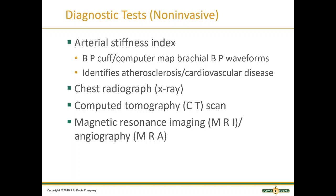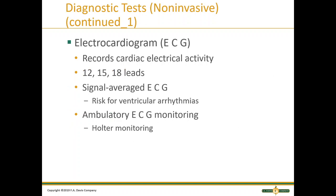The atrial stiffness index uses a blood pressure cuff and computer mapping of the brachial artery, helping to identify atherosclerosis. It can also be seen on a chest X-ray, CT, and MRI.